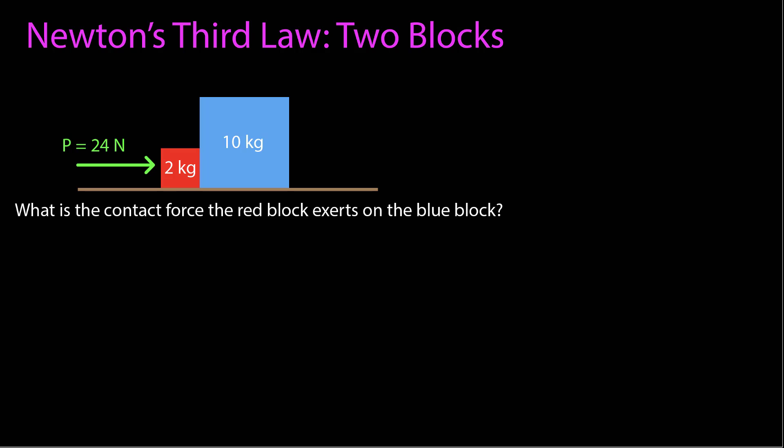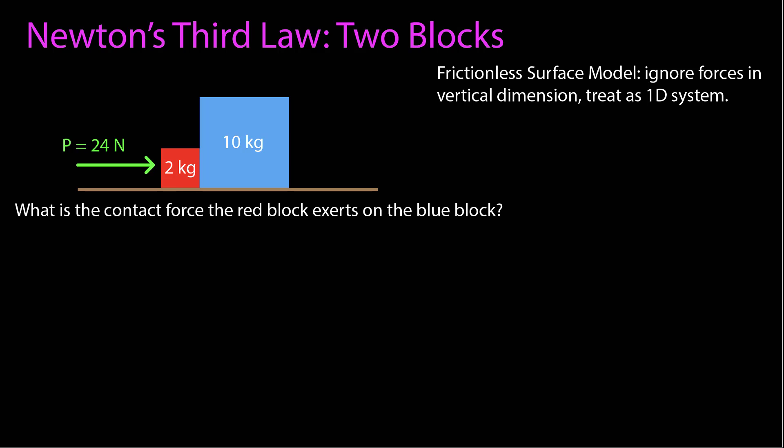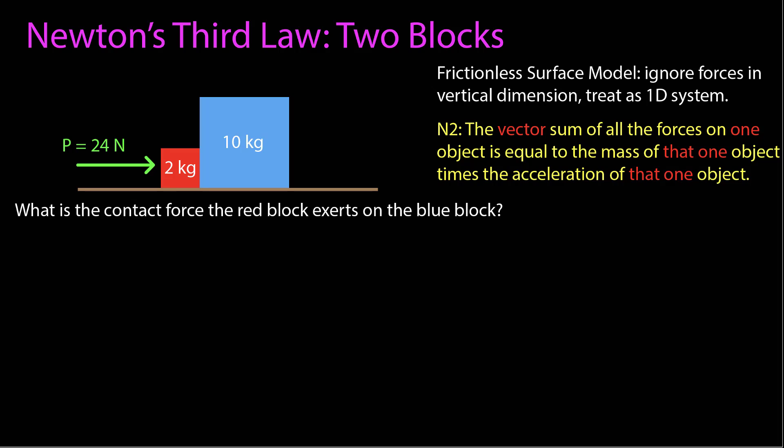Let's think about our system — what do we know, and what does it tell us? We are told it's sliding on a frictionless surface, so I'll use the frictionless surface model where I can ignore forces in the vertical dimension and treat the system as one-dimensional in the direction where everything is moving. I'm thinking Newton's third law applies, and I want to use Newton's second law to create relationships between known and unknown quantities.